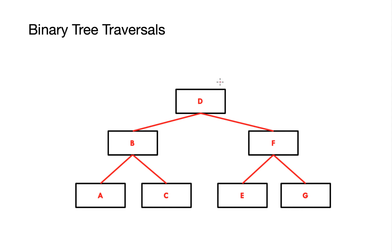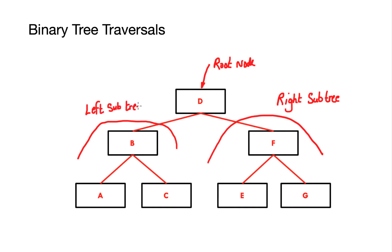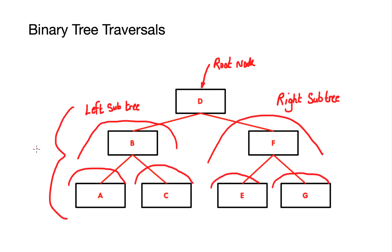Before we do that we need to understand what is meant by a binary tree. A binary tree starts with the highest node being called the root node or the parent node, and each subsequent child of the root node is classed as a subtree. Those to the left are called the left subtree and those nodes to the right are called the right subtree.